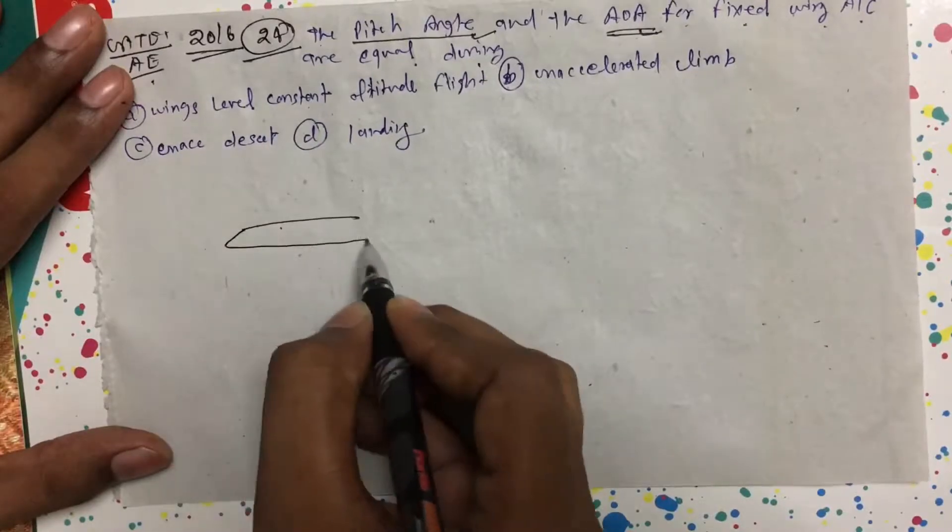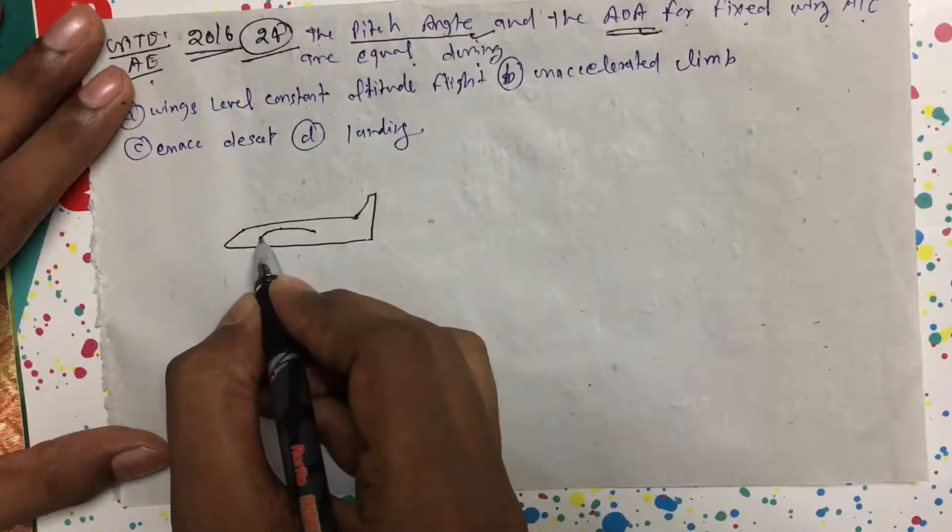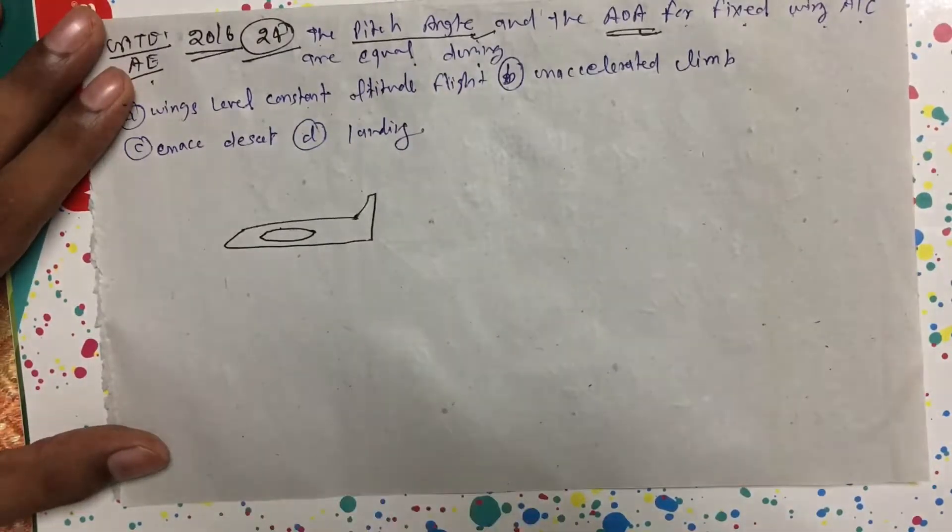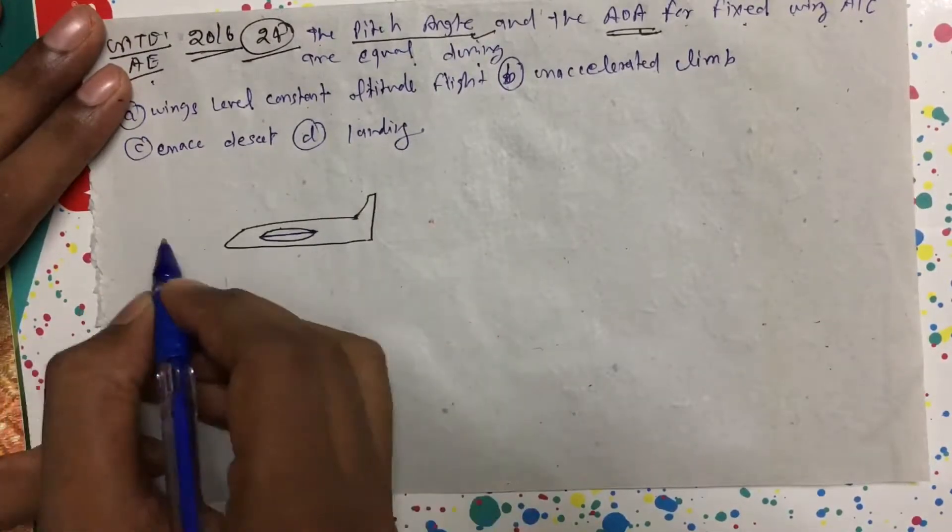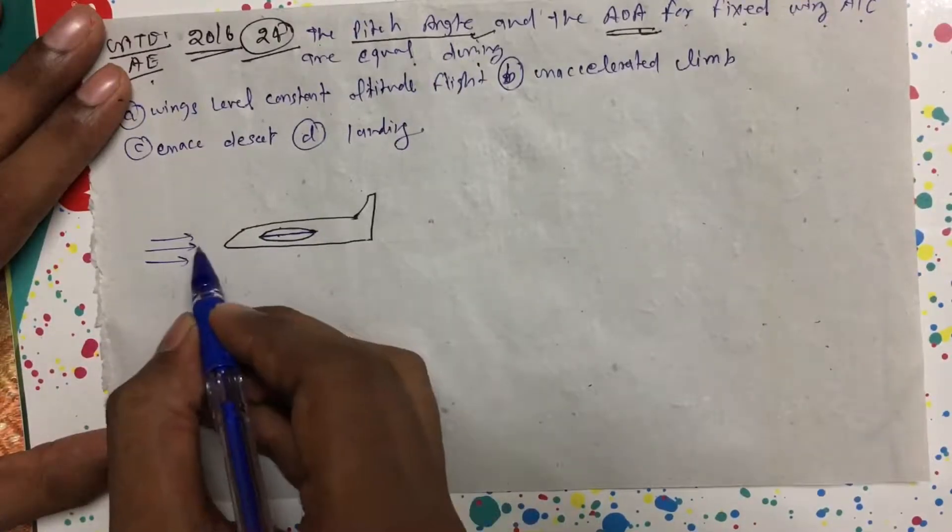Suppose this is the aircraft, then here we have the wing. Suppose this is the chord line. Suppose this is the chord line, and if air is coming like this...